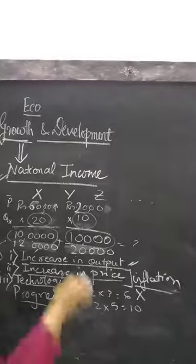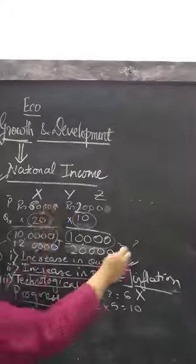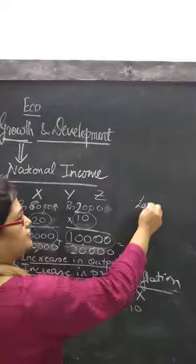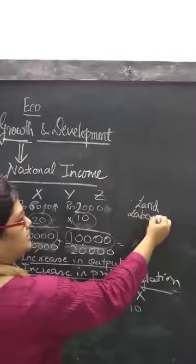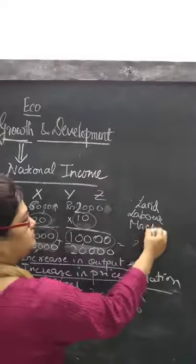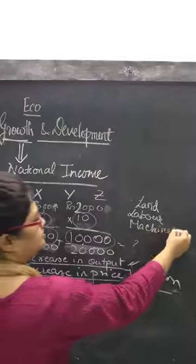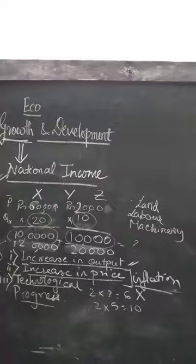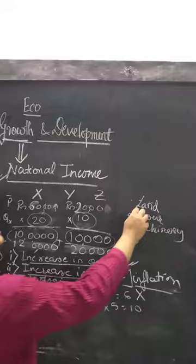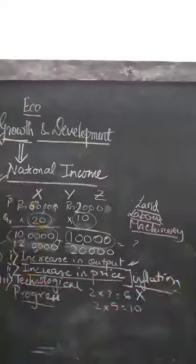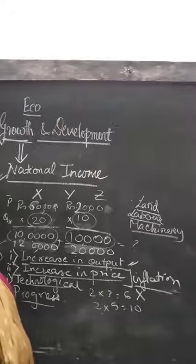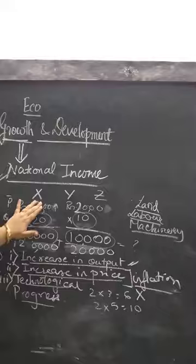In the production of commodity X, various factors are being used — land, labour, capital or machineries. There are a lot of factors used in the production process, and the efficiency of any of these factors can increase. If any factor's efficiency increases, that will be reflected in production. Let us take this commodity X as an example.